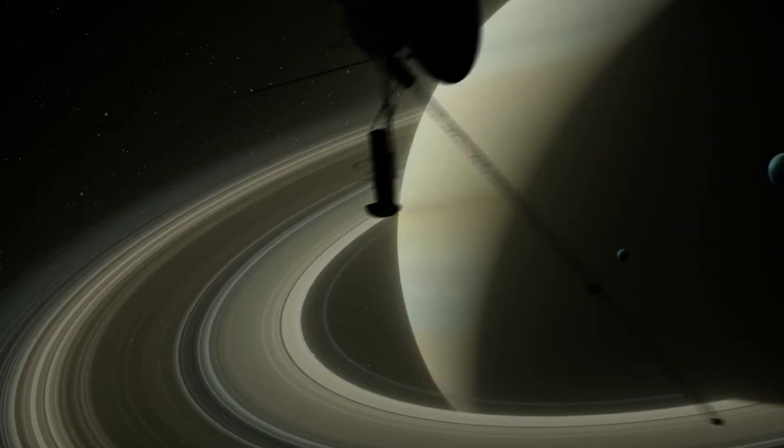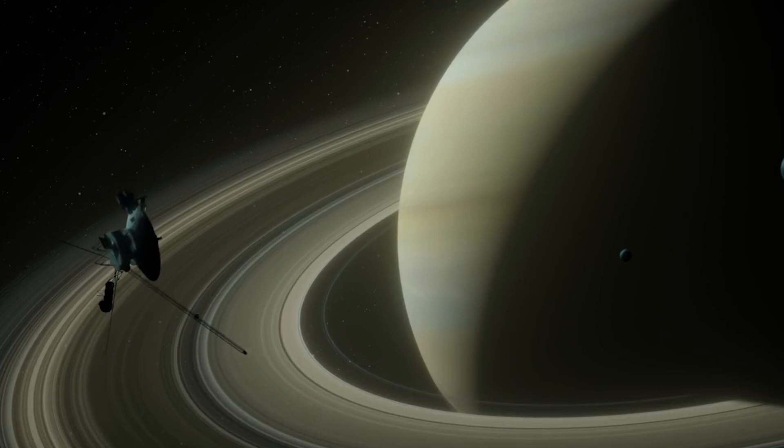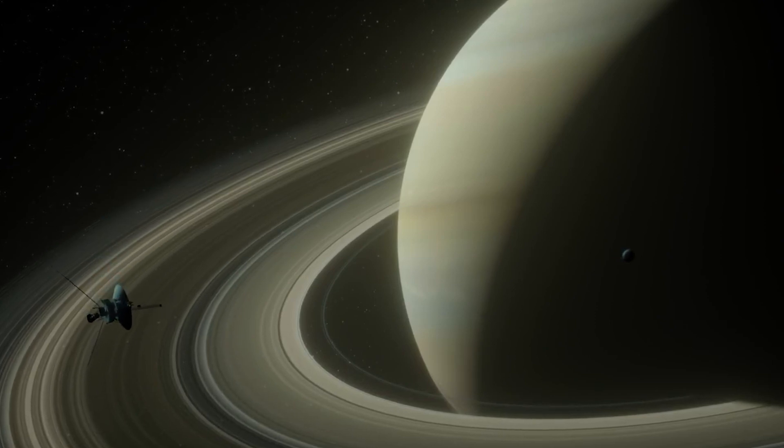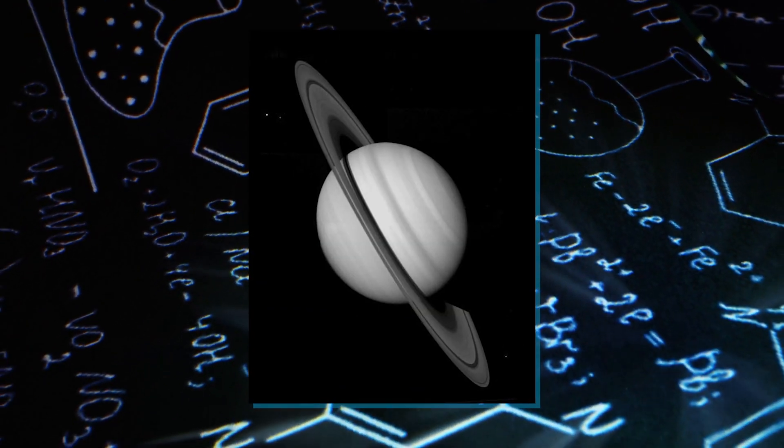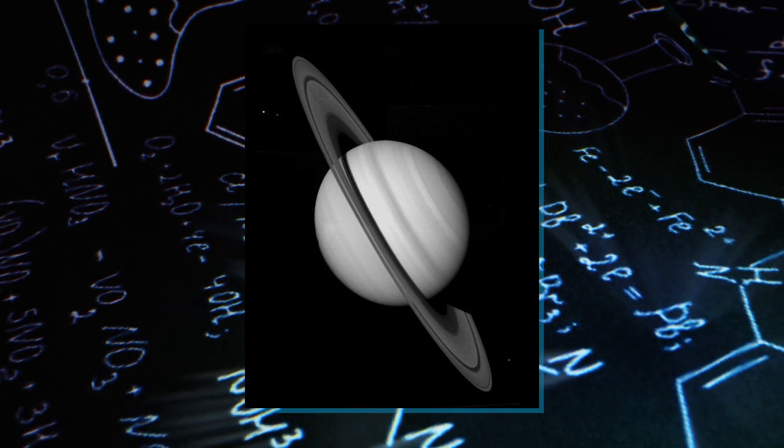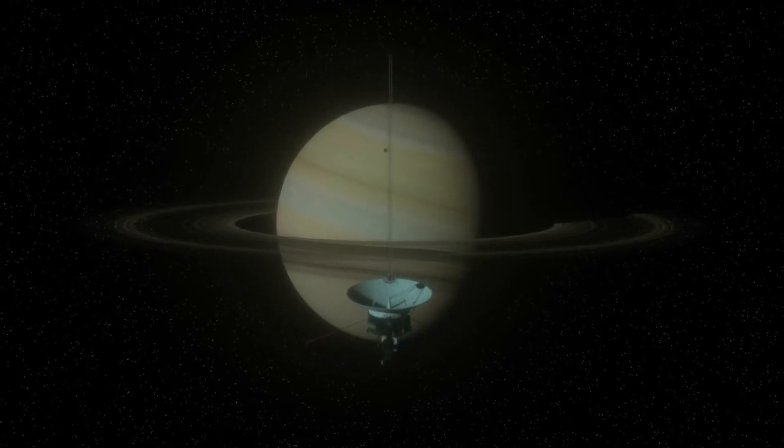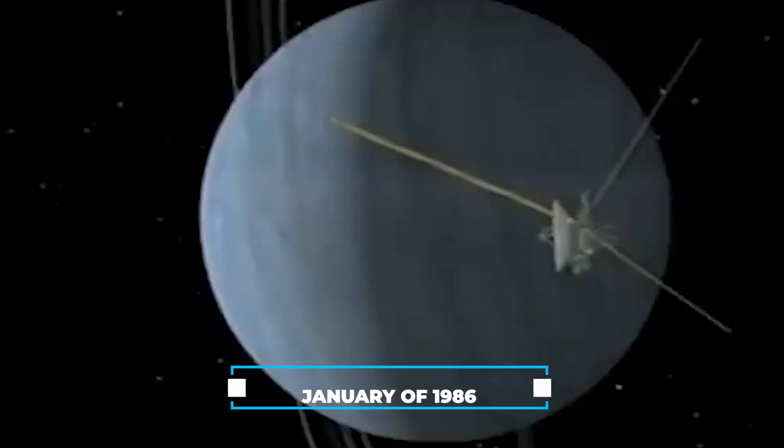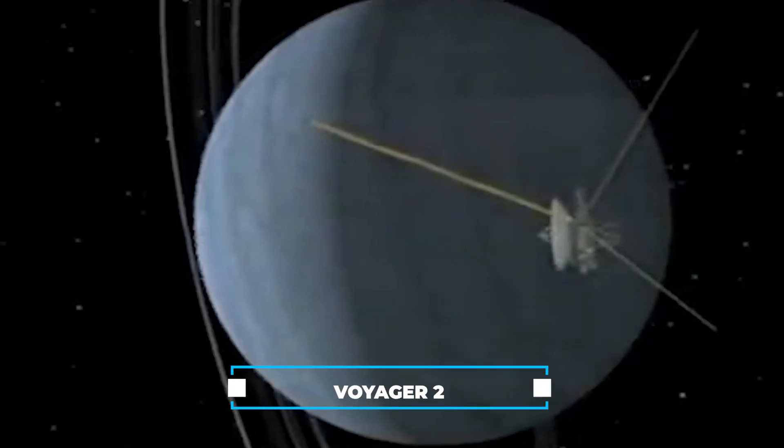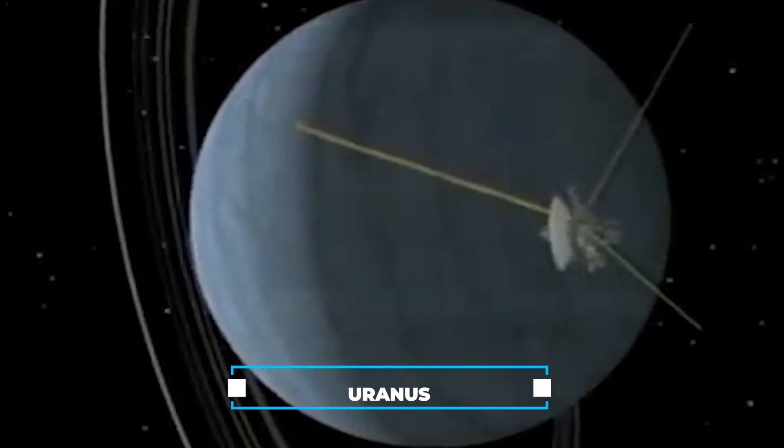When Voyager 2 reached Saturn during its ongoing mission in August of 1981, it captured mesmerizing photographs that unveiled the intricate patterns and structure within the planet's renowned rings.